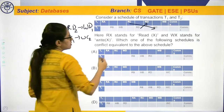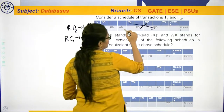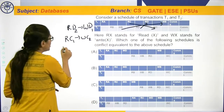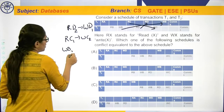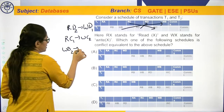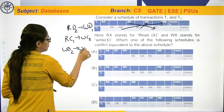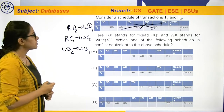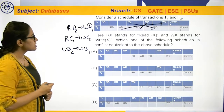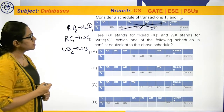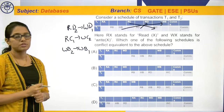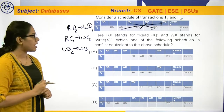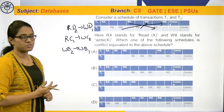Then Wb and Wb: Wb of T2 should be done first and then Wb of T1. So these are the conflicts — WW and WR or RW conflicts.